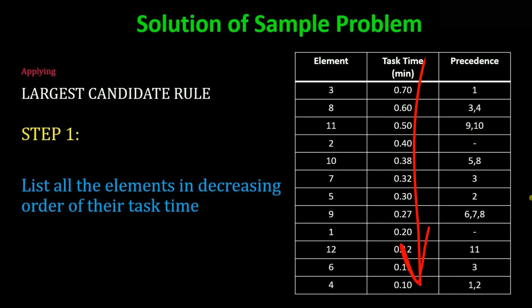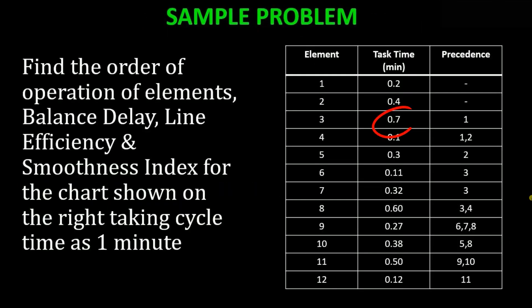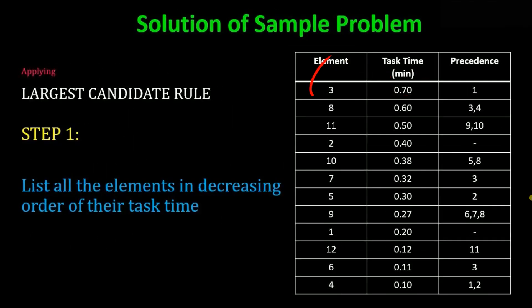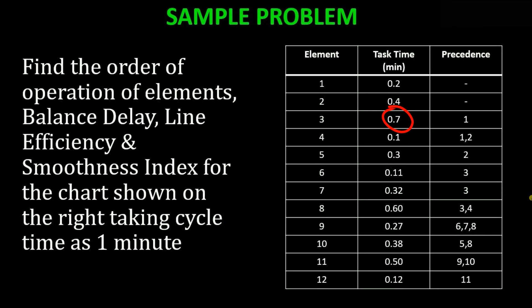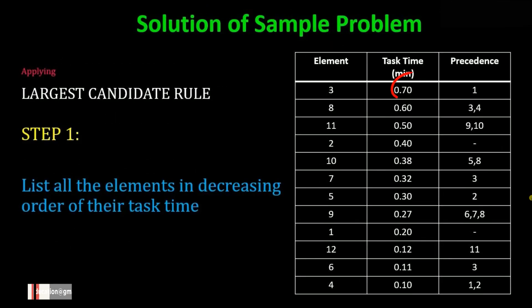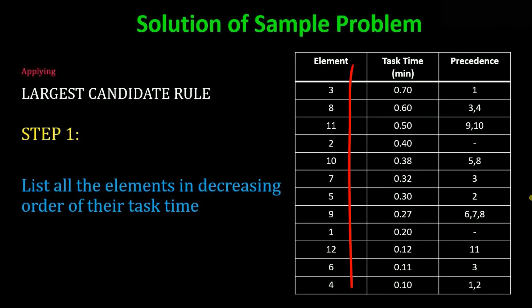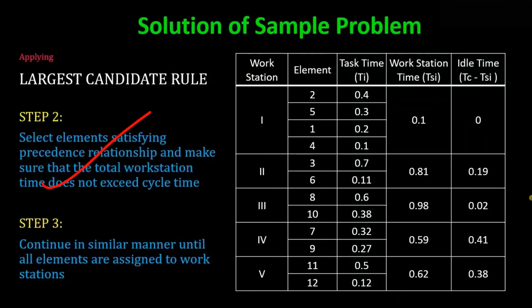Together with the sorted task times, we write the corresponding element number and precedence. For example, 0.7 task time belongs to work element 3, whose precedence is 1 — so we write 0.7, element 3, precedence 1. Likewise, you arrange the entire table with elements and their precedence in decreasing order of task time. This completes Step 1.